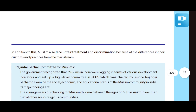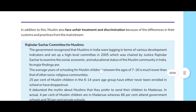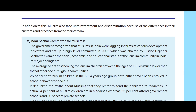In addition to this, Muslims face unfair treatment and discrimination because of their differences in customs and practices from the mainstream. There is a very important commission and report on Muslims: the Rajindar Sachar Committee. The government recognized that Muslims in India were lagging in terms of various development indicators and set up a high-level committee in 2005, chaired by Justice Rajindar Sachar, to examine the social, economic, and educational status of the Muslim community in India.